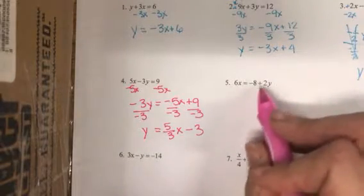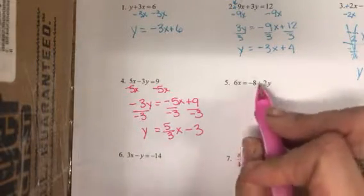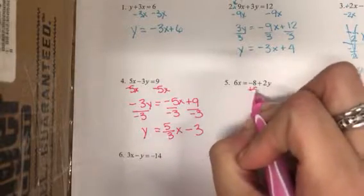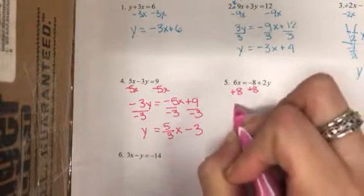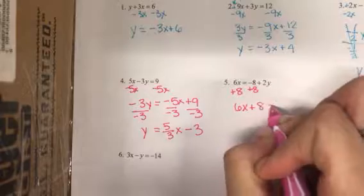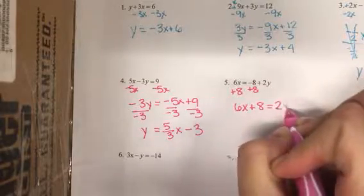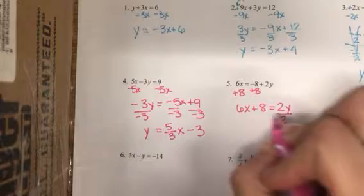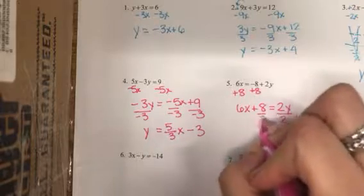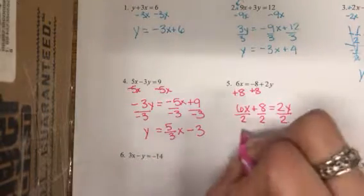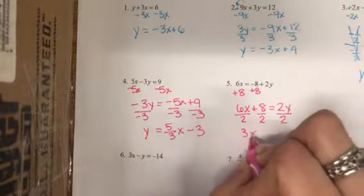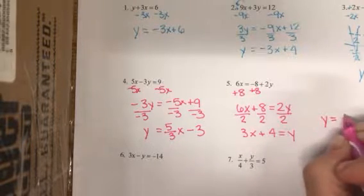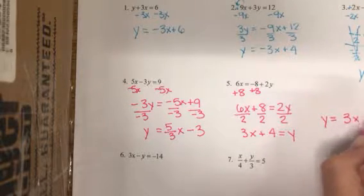Number five: the y is over on the right side, so the other thing over here with it is this 8, so we're going to move a negative 8 by adding 8. Then we'll undo multiplying by 2 by dividing by 2, giving us 3x plus 4 equals y. If you prefer the other format, write y equals 3x plus 4.